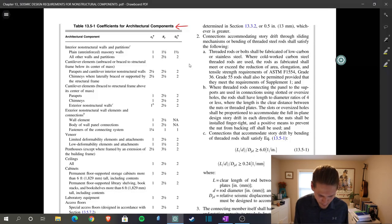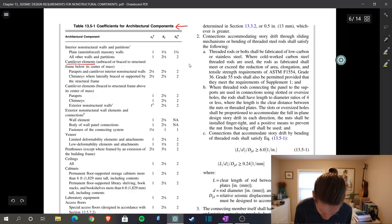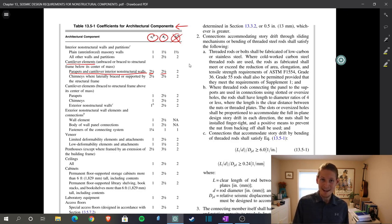We've jumped over to Table 13.5-1, which is Coefficients for Architectural Components, and as you will see under cantilever elements, unbraced or braced to structural frame below its center of mass, this is unbraced, we have parapets and cantilever interior non-structural walls. Well, we have a parapet, and if you look, you have A sub P, and you have R sub P. You also have omega, but we're not worrying about omega right now. A sub P is 2.5, and R sub P is 2.5. Let's go back to our calcs, let's write down the equation, and let's write our knowns, and let's write our unknowns still. See you in there.